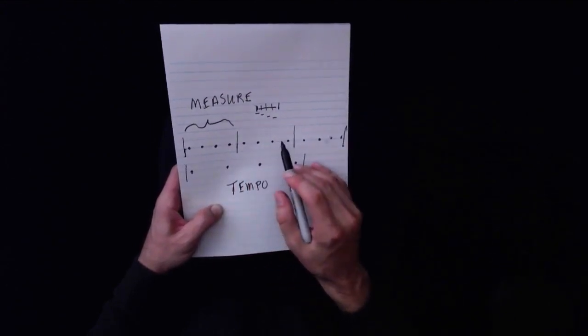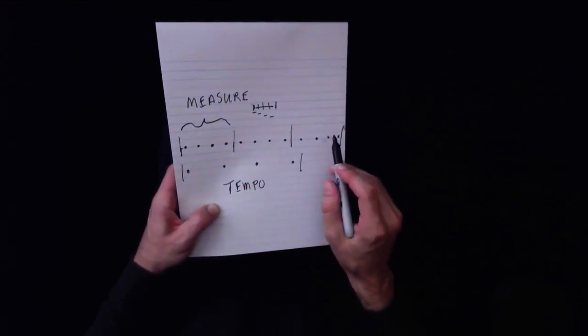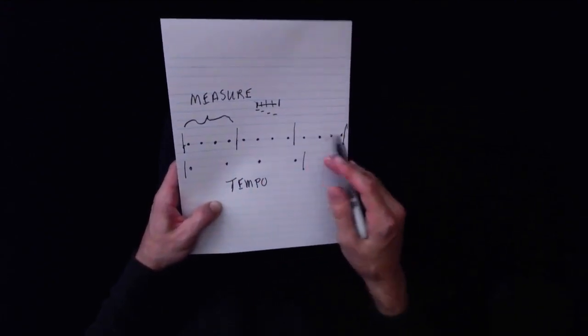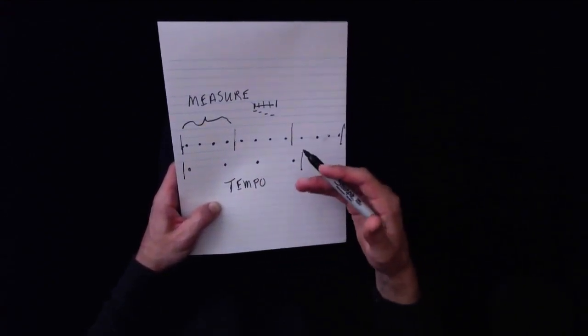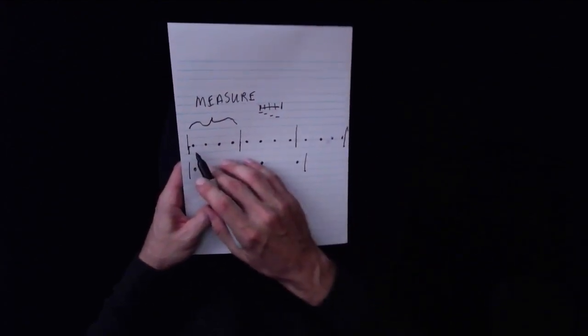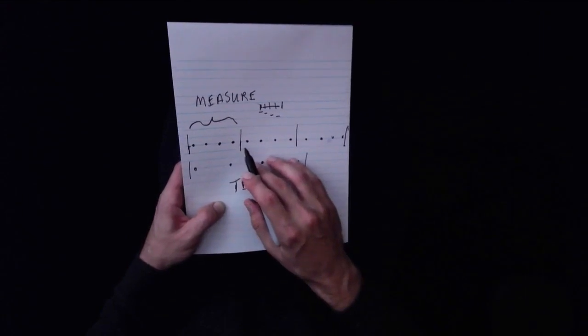Here's one measure, here's a second measure, here's a third measure. Now, this might start looking familiar to you because it might start looking like sheet music, or it might start looking like music that you've seen before.